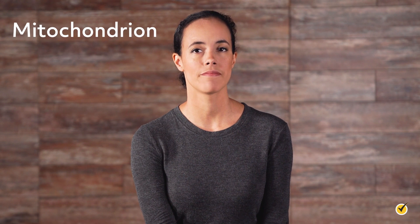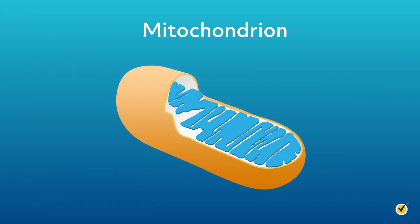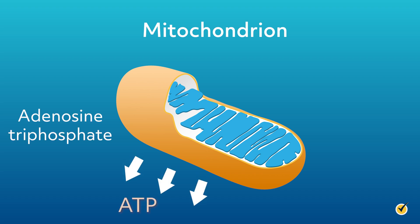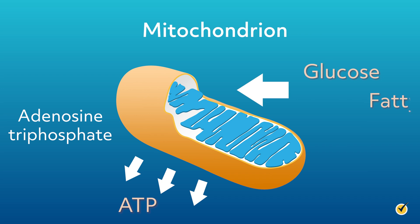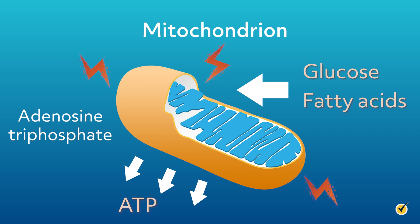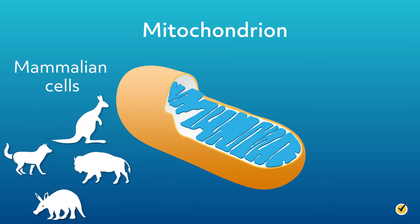To start off, what exactly is a mitochondrion? It's a specialized organelle found in eukaryotic cells that primarily generates adenosine triphosphate (ATP) by oxidizing glucose and fatty acids. In other words, the mitochondrion is the energy producer for the cell. Mammalian cells have hundreds of thousands of mitochondria per cell, but this number can change based on the specific role and energy needs of the animal's cells.